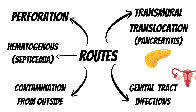Contamination from outside can occur during surgery or following trauma when there is an open injury to the abdomen, leading to entry of bacteria from the external environment into the peritoneal cavity. A very rare route of spread is hematogenous, which occurs in cases of septicemia when bacteria spread through the bloodstream and can reach the peritoneal cavity causing peritonitis.